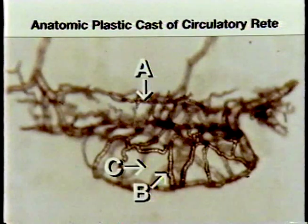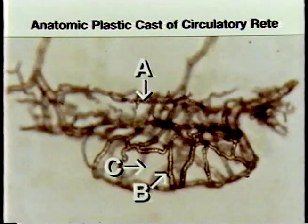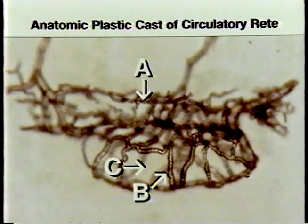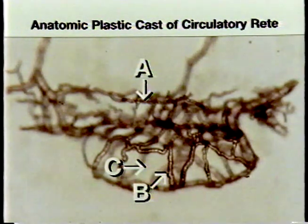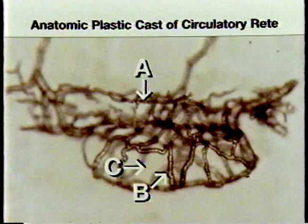This is a typical circulatory reedi from a mouse infected with a mouse. The cast was obtained by employing an anatomic plastic casting technique allowing for the visualization of all vessels. Note the width and the size of the reedi of the vessels. Arrow C indicates the space once occupied by the nurse cell parasite complex. A typical muscle capillary is indicated by arrow A. The reedi most closely resembles sinusoidal vessels.